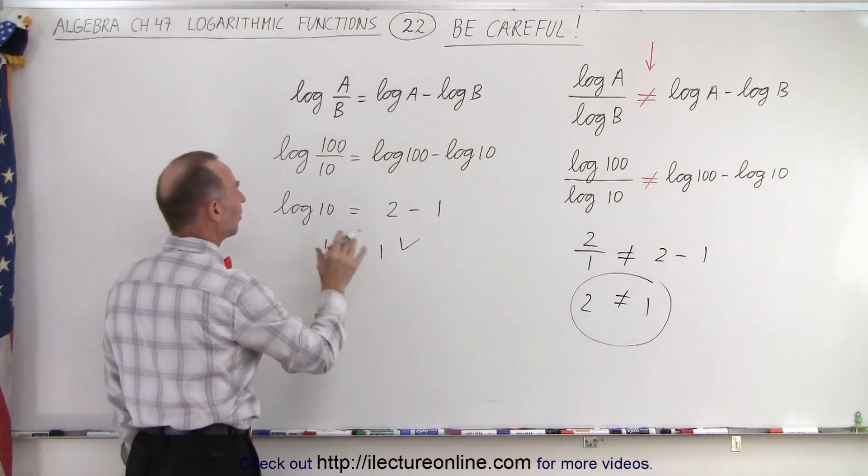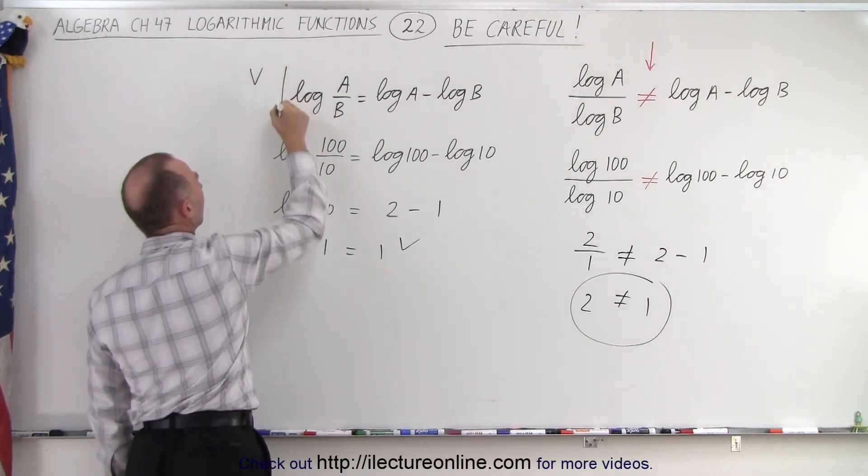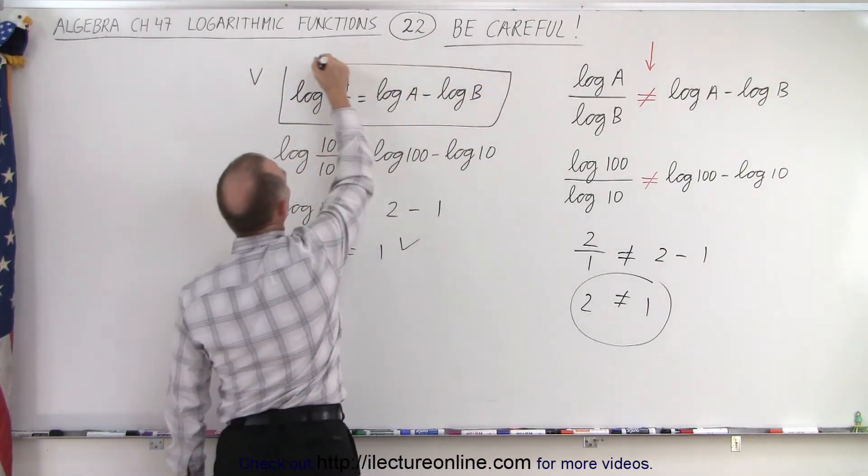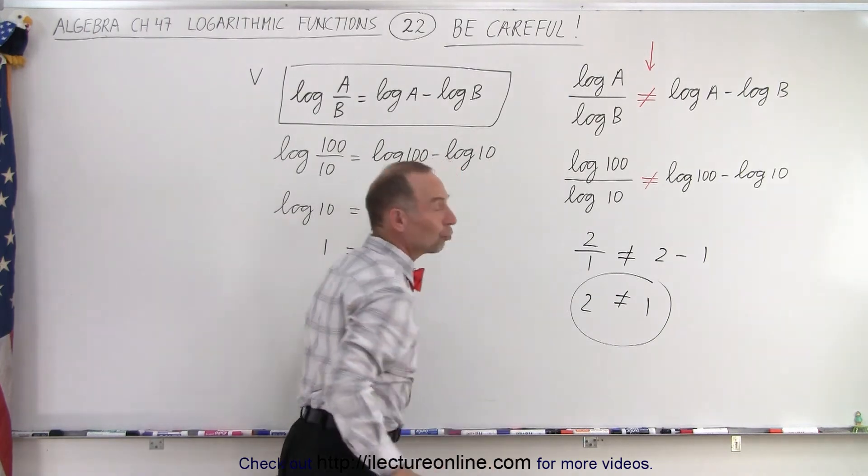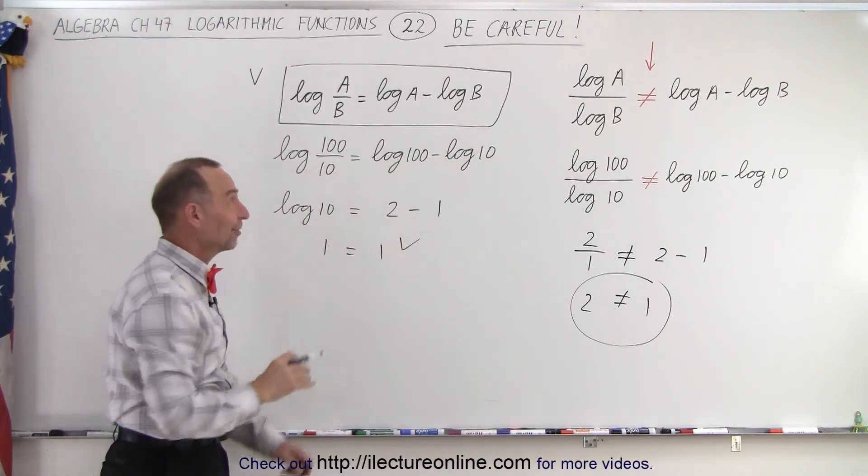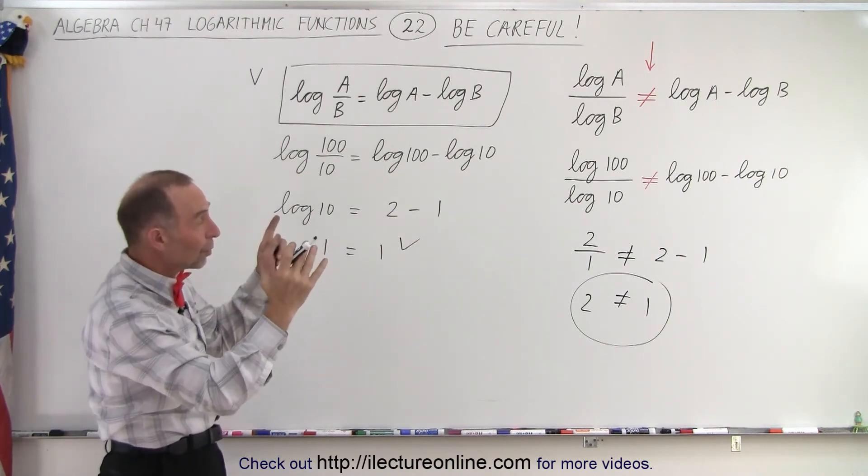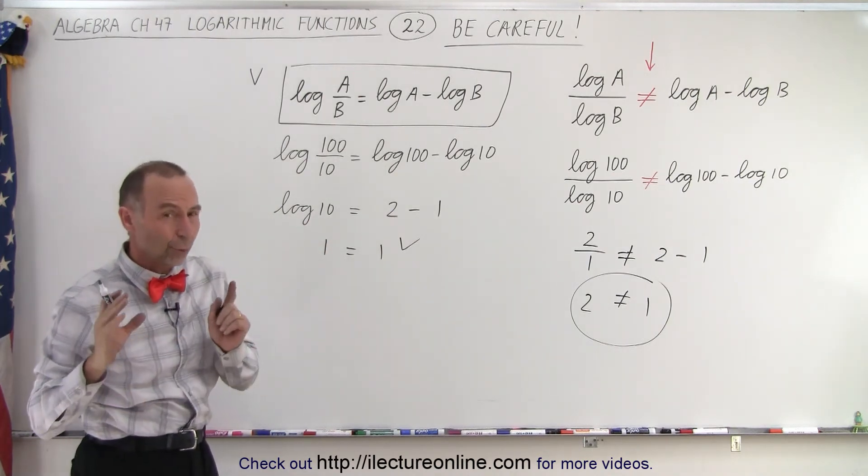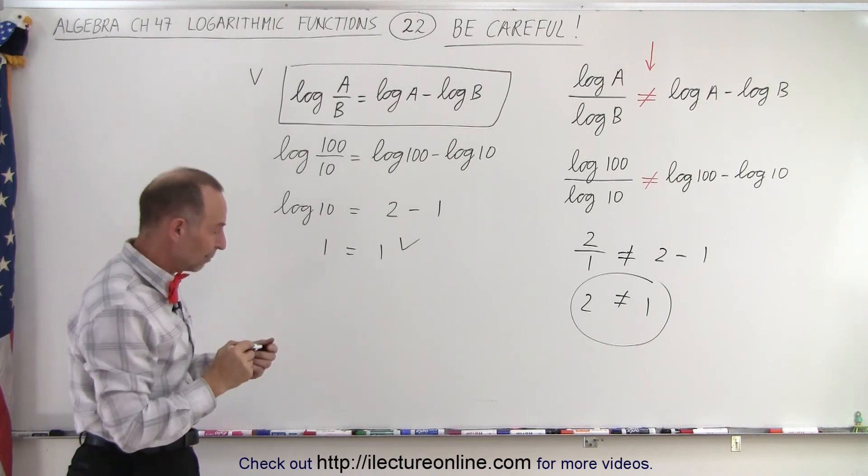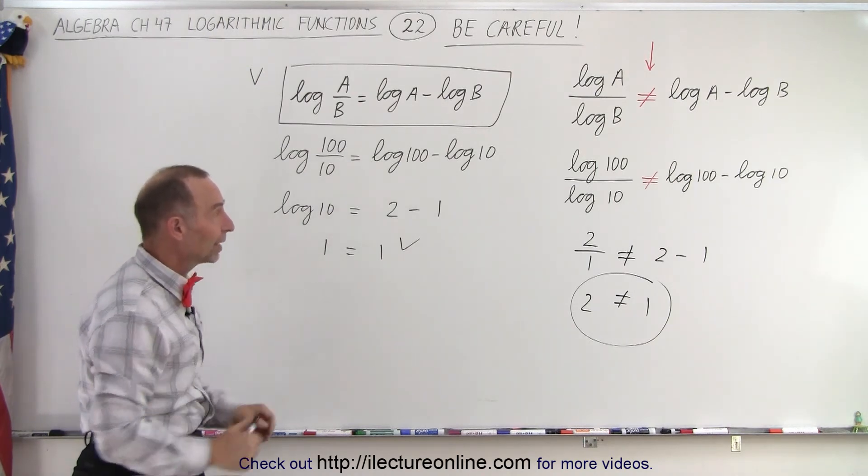Here you can see that 1 equals 1 and this is equal. This is the correct quotient rule. This is not the quotient rule. Again I even fall for that sometimes. I look at that and go isn't that log A minus log B and then you realize no it's not the log of a quotient so you really need to be careful not to make that mistake and that is how we can tell the difference.